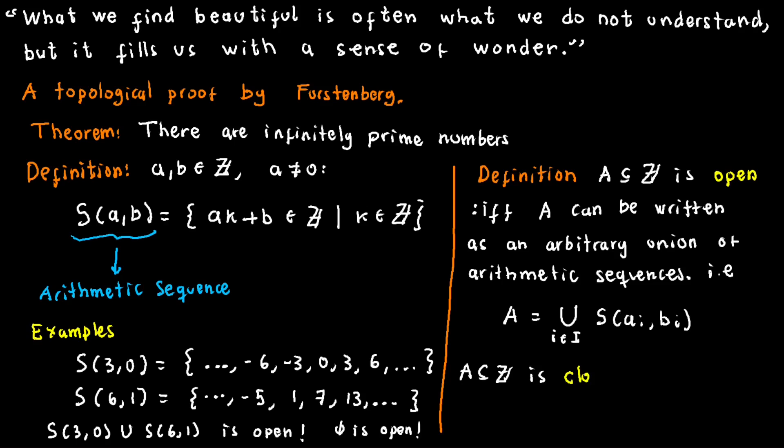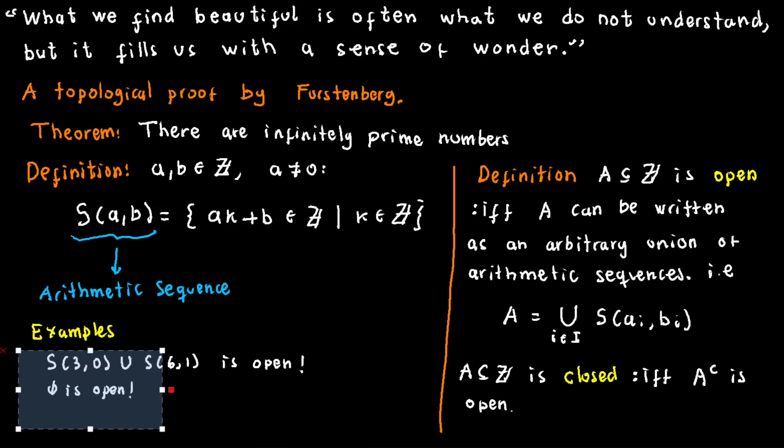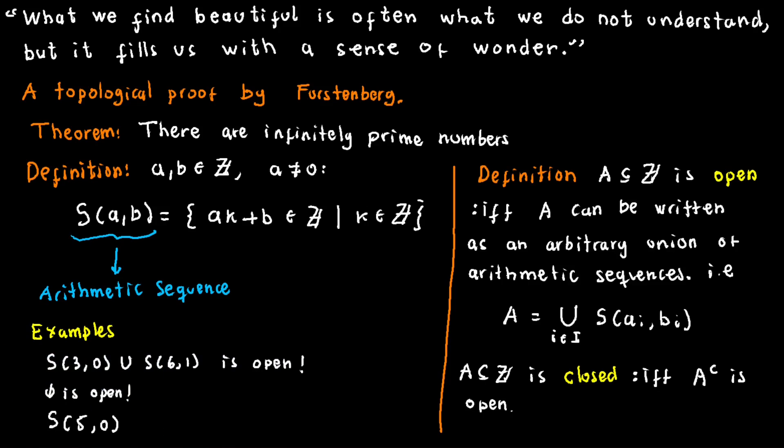Similarly, he terms a set closed if it stands as the complement of an open set. Take the set of elements not multiples of 5, for example. It is classified as a closed set because it forms the complement of S(5,0).